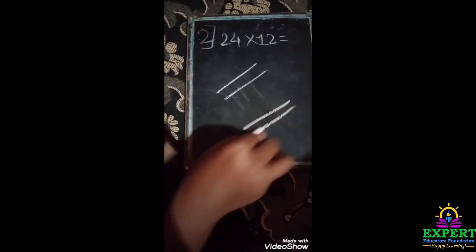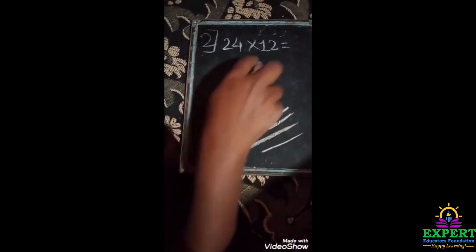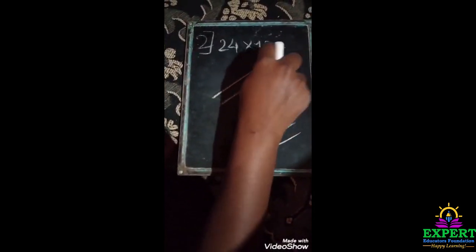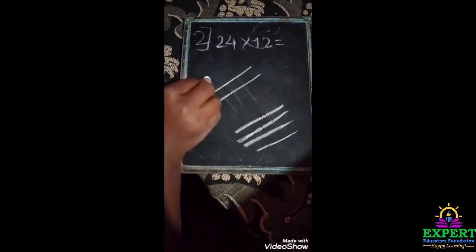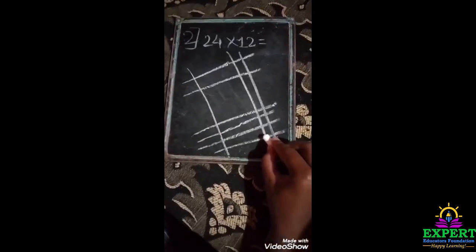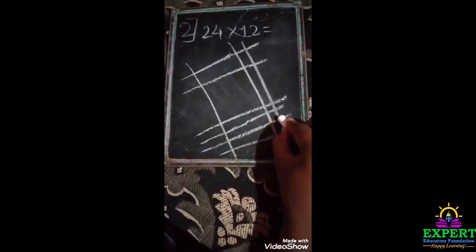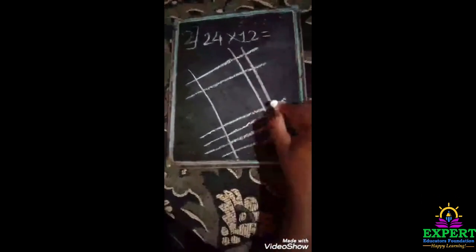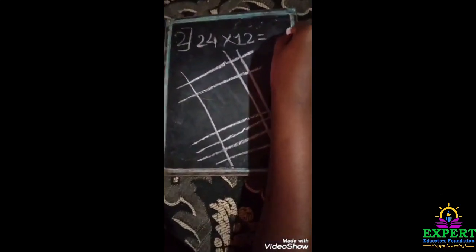And here four, one two three four. Here twelve means one and two, so one we will draw here and two means one two. So here one, two, three, four, five, six, seven, eight. So we will write here eight.